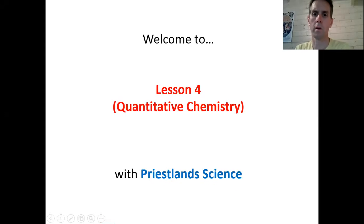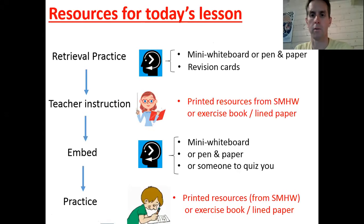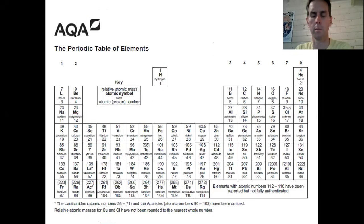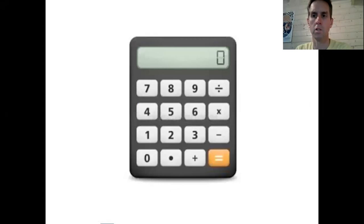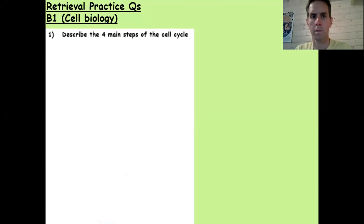Hi folks, welcome to Lesson 4, Quantitative Chemistry with Precision Science. The same lesson format as per usual, so start the video any time and go and get what you need. You definitely need your periodic table again, and you're definitely going to need your calculator again. So if you've not got it, go and get it now. And we'll start with our first retrieval slide, so pause and retrieve.